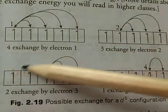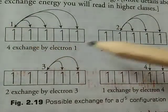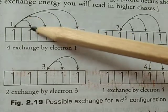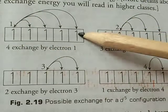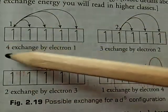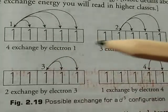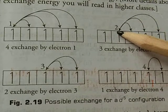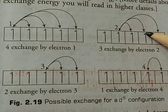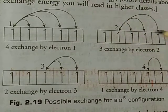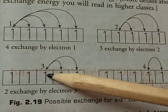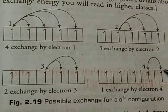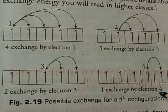Exchange energy means two or more electrons with the same spin present in degenerate orbitals of a subshell can exchange their positions, and the energy released during this exchange is called exchange energy. For example, with 5 electrons in 3d orbitals with parallel spin: electron 1 exchanges with orbitals 2, 3, 4, 5 (4 exchanges); electron 2 exchanges with 3, 4, 5 (3 exchanges); electron 3 with 4 and 5 (2 exchanges); electron 4 with 5 (1 exchange) — giving maximum exchange energy and maximum stability.